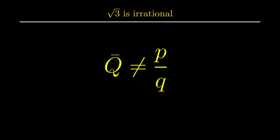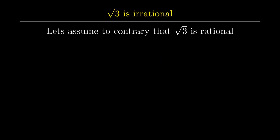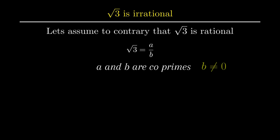Let's prove that root of 3 is irrational. Since irrational numbers can't be expressed in the form p over q, let's assume to the contrary that root of 3 is rational. Since it is assumed rational, and rational numbers are expressed in simplest form, root of 3 is represented as a over b, where a and b are coprime integers with b not equal to zero.